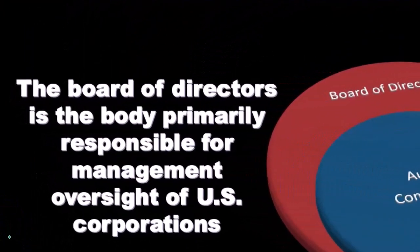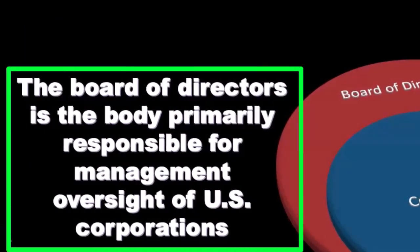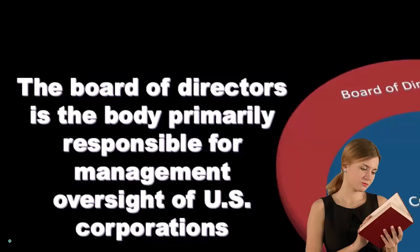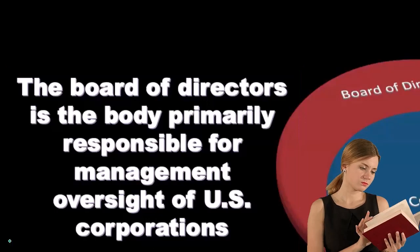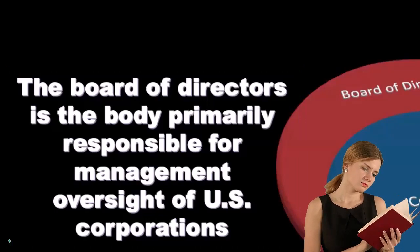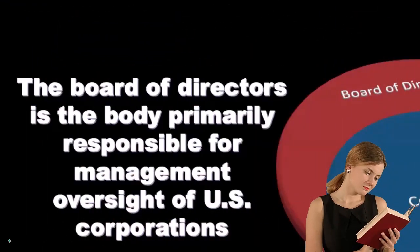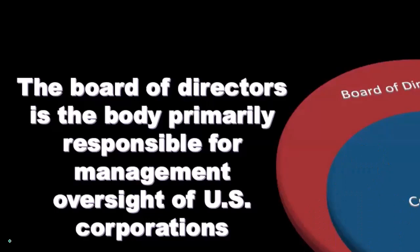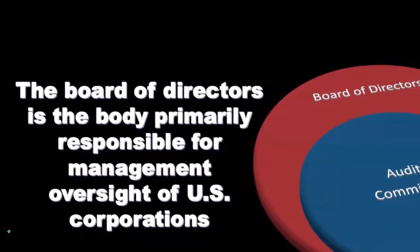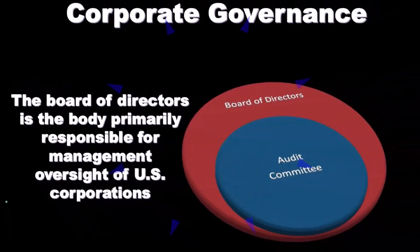The board of directors is the body primarily responsible for management oversight of U.S. corporations. Management is there to act as agents of the owners — the shareholders. So how do we ensure management acts as agents? We have the board of directors, who are voted on by the shareholders, to oversee and control management on behalf of the owners.